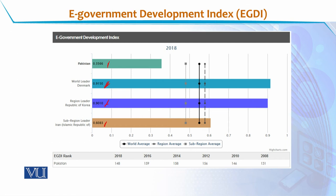Pakistan ranked 148th in 2018, whereas it was ranked 131st in 2008. So in 10 years, instead of improving, Pakistan has gone down in its EGDI index.